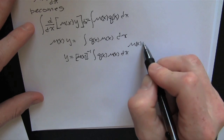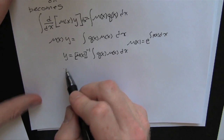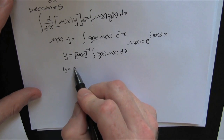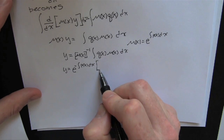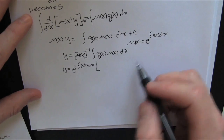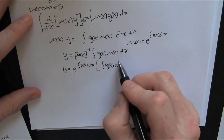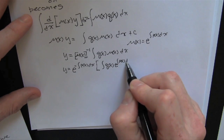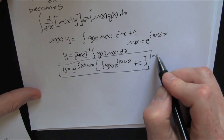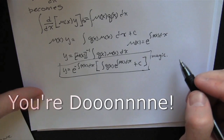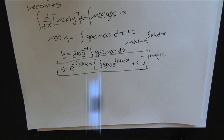Let's remember: mu of x was e to the integral of p(x) dx. So I'm going to substitute that back in here so that we can get the form that's in your book — their magic formula that they expect you just to write down and remember. I'm like, oh, why don't you just remember where it comes from, and perform the process that we just did in this derivation. When I integrated both sides, I just had to add that constant of integration. And there you have it. You're done.